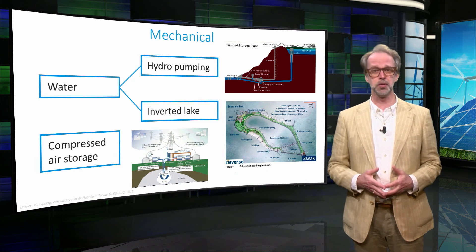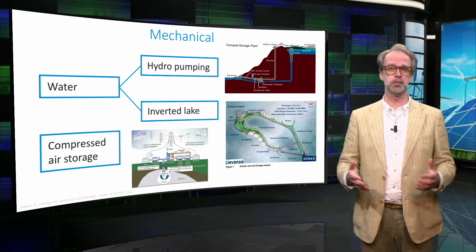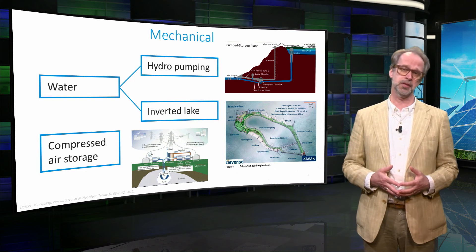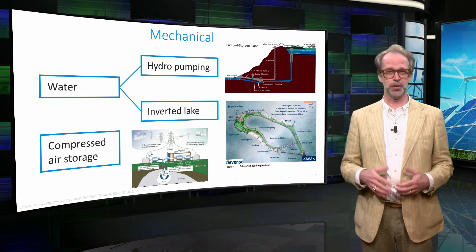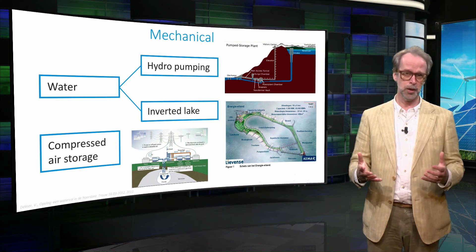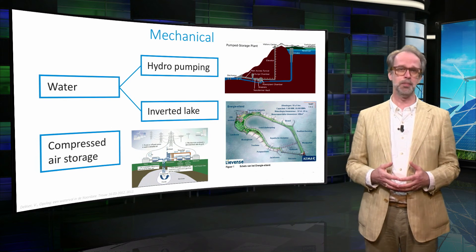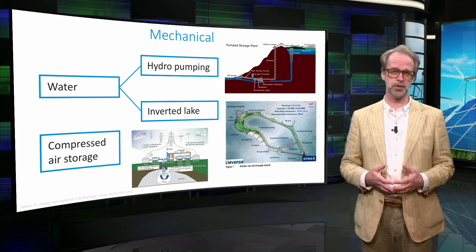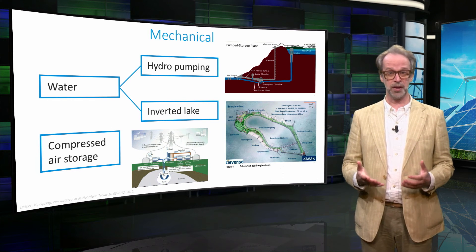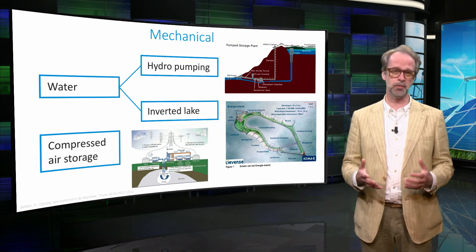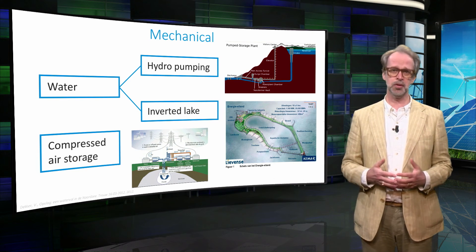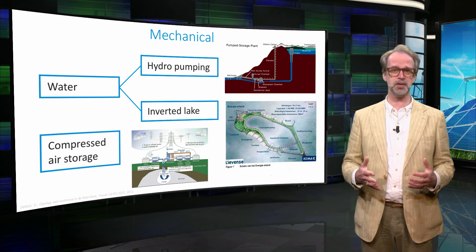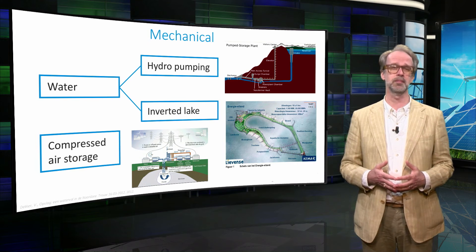These conventional storage facilities have a reasonable cycle efficiency, in general around 80%. But their capacity is limited and their availability depends strongly on geographic conditions. Hence, while these techniques might be used to cover some of the daily fluctuations, they will certainly not have the capacity needed for seasonal storage.